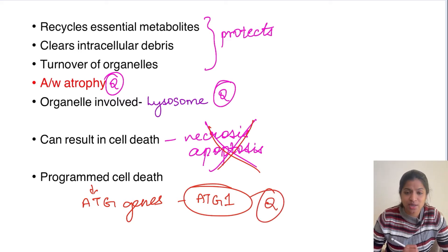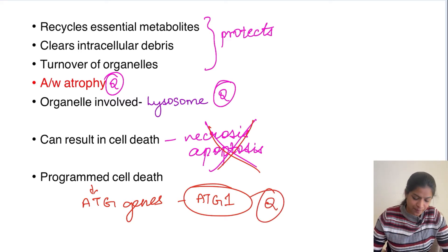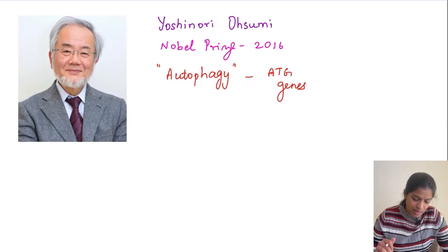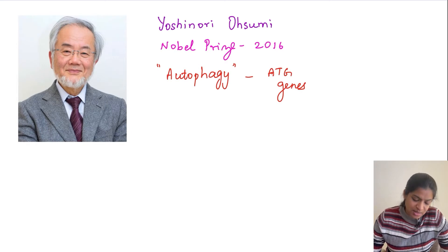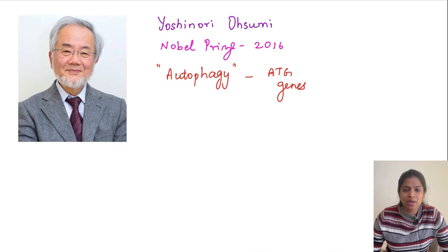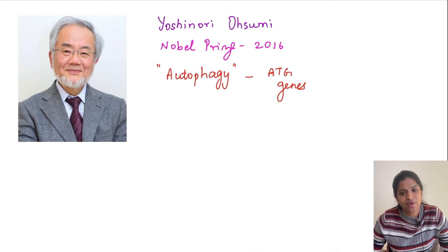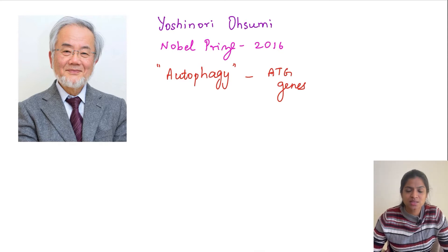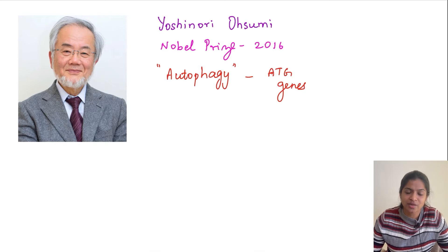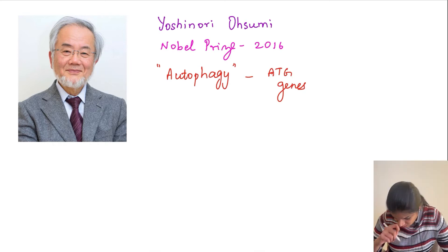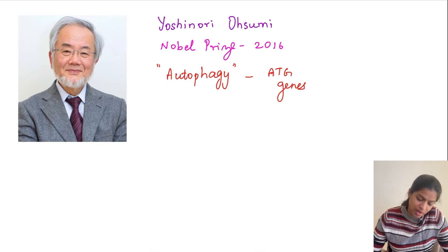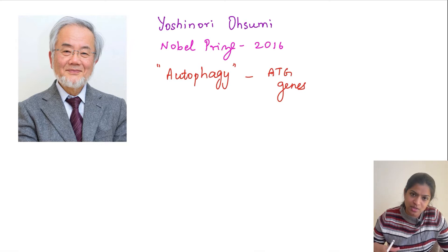ATG1 is the most important gene related to autophagy. The Japanese scientist Yoshinori Ohsumi won the Nobel Prize in 2016 for identifying the mechanisms of autophagy. He was the one who identified these ATG genes and gave us this mechanism of autophagy.